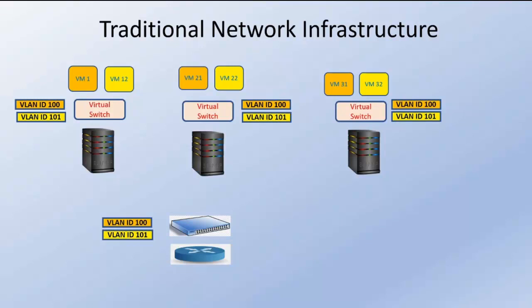Let me show you first how the packet moves without network virtualization. If I have a packet lying on virtual machine VM1 and I want to move this network packet from VM1 to VM12, both virtual machines VM1 and VM12 lie on two different VLAN IDs — VM1 on VLAN ID 100 and VM12 on VLAN ID 101.